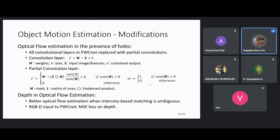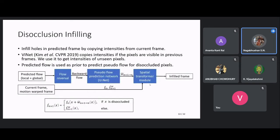We also make another modification: because we are considering synthetic scenes, the depth map is already available. At places where intensity-based matching is ambiguous, the depth map can help. We therefore input the depth map to the optical flow estimation network as well. Using this, we predict optical flow from frame n to n-2, extrapolate to get flow from n to n+1, add the camera motion, and perform motion warping to obtain the motion-warped frame n+1, which still contains disocclusions.